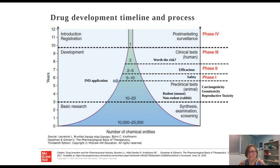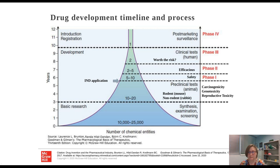The drug development timeline and process — how do we get a drug to market? Basic research generally identifies chemicals through synthesis, screening, or examination. Medicinal chemists identify and modify a number of novel structures that may have activity at our receptor of interest. We then look at the metabolism and distribution properties in primary cell culture first. If any of these 10 to 25,000 initial hits have the appropriate properties, they move on to preclinical testing in animals.